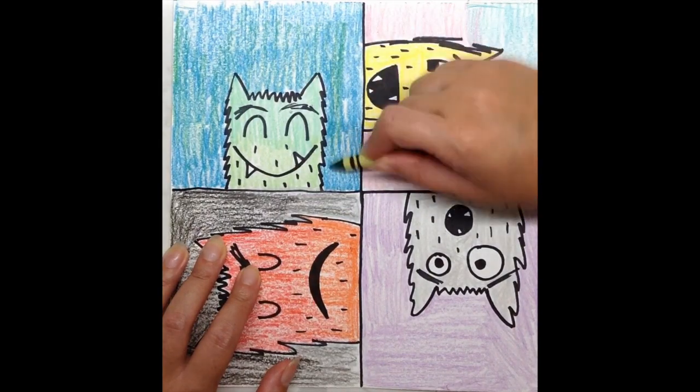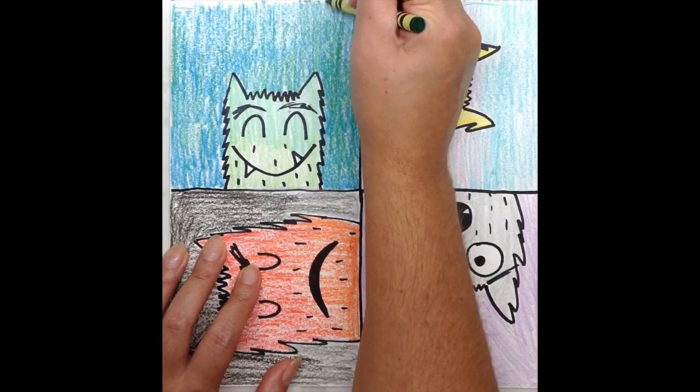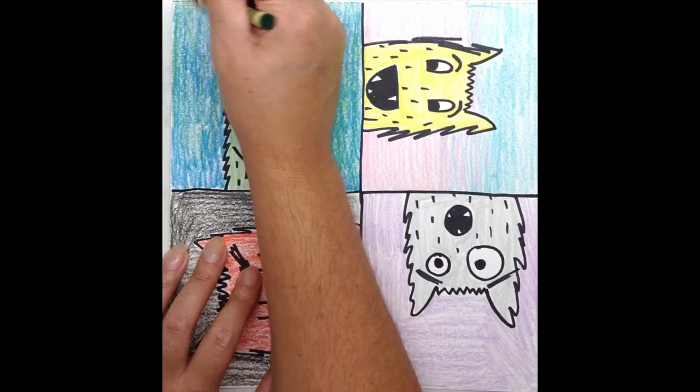As you're coloring, make sure to double check for white spaces and ensure that all of your color monsters are colored in with colors that remind you of the emotion they're showing.